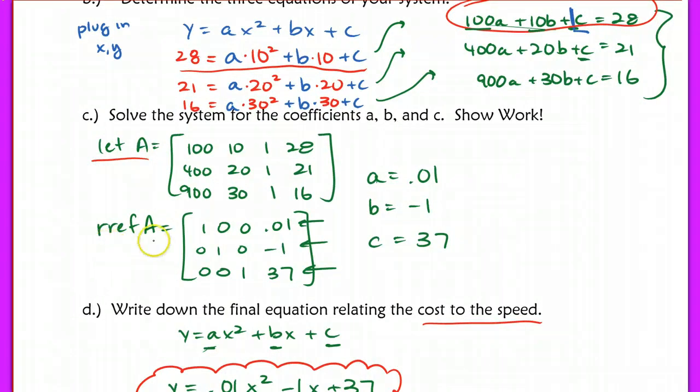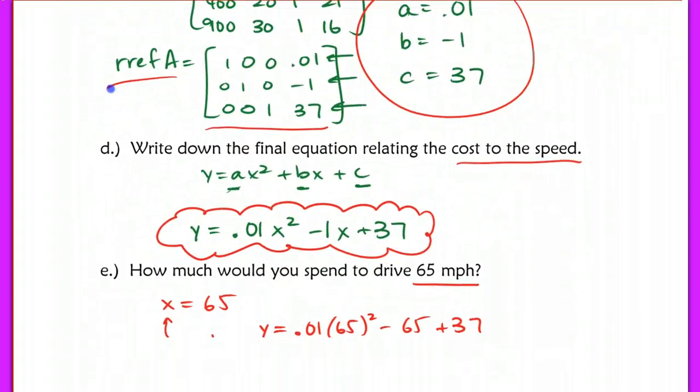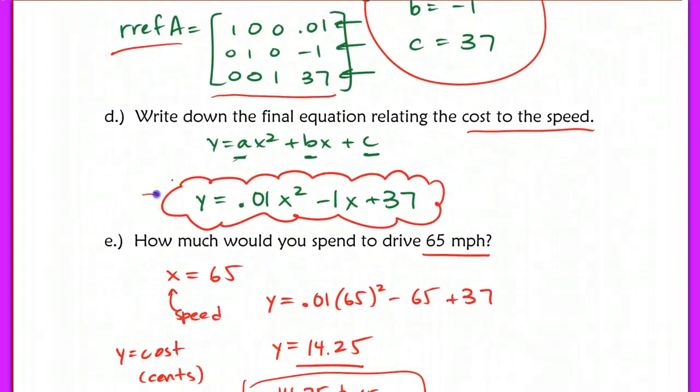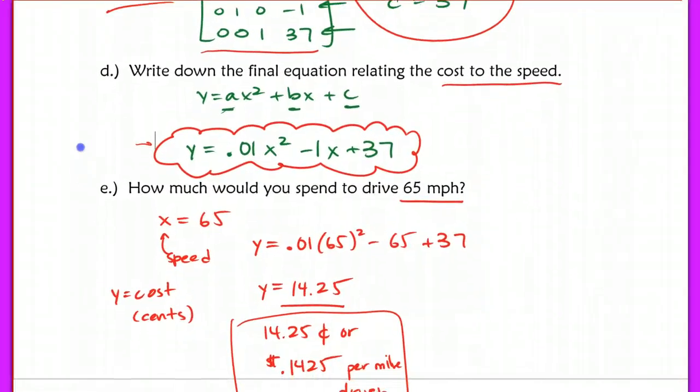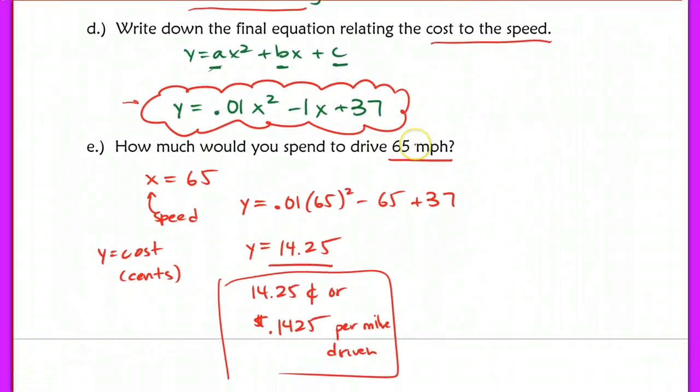After we plugged in our matrix here, A equaling this matrix here, we row-reduced echelon formed it, got this answer, interpreted our solution, and then we had our final equation. Then we used our final equation here in part E to actually find how much you would spend when driving at 65 miles per hour.